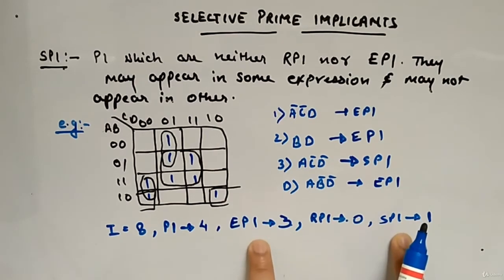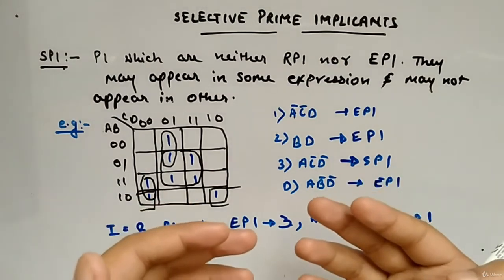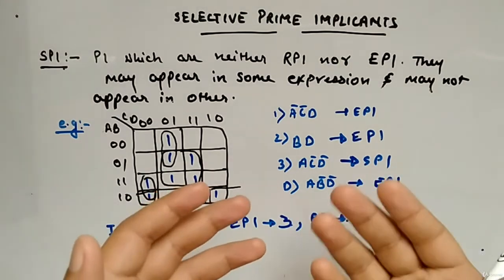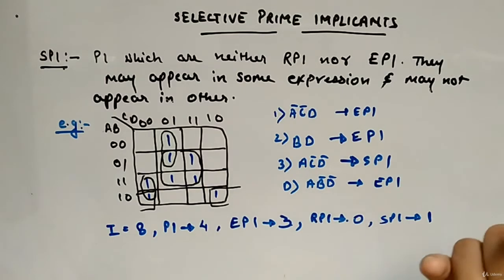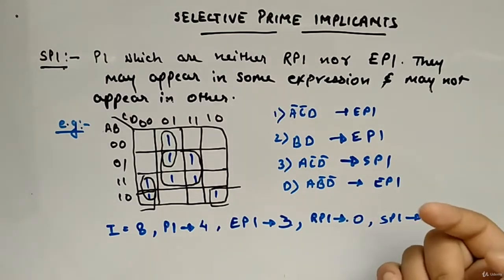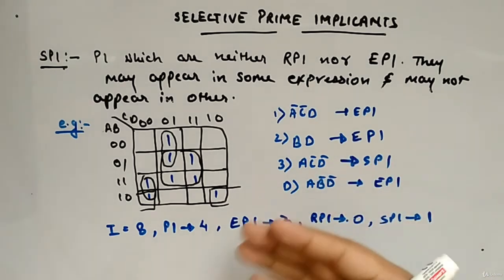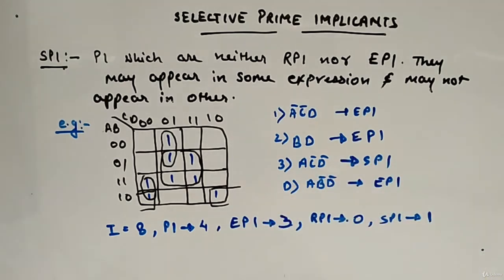You can see that the total of SPI and EPI equals the total prime implicants. Among all prime implicants, there will be selective prime, redundant prime, or essential prime implicants. So I hope it is properly clear. We will apply the same technique on one more example.